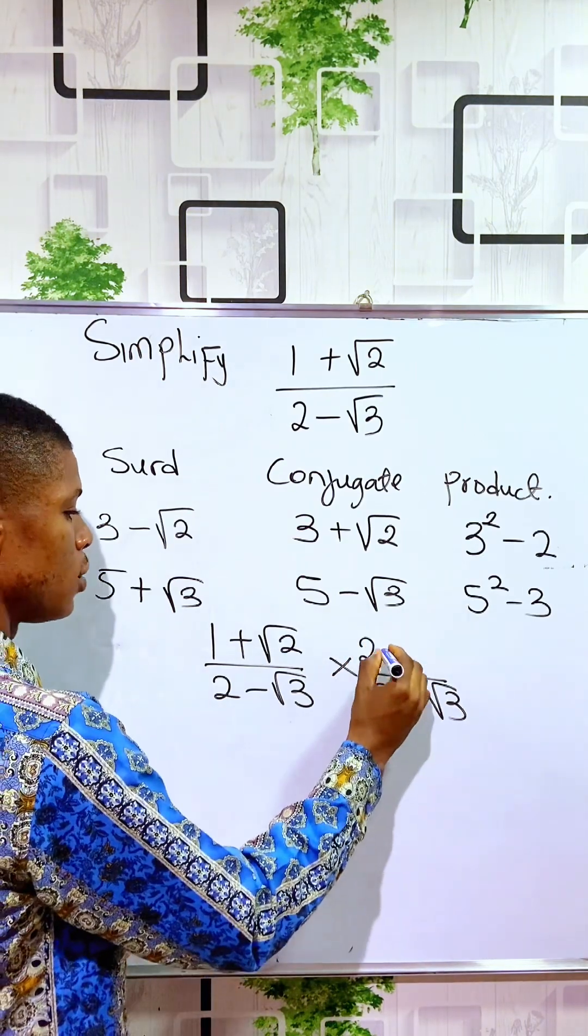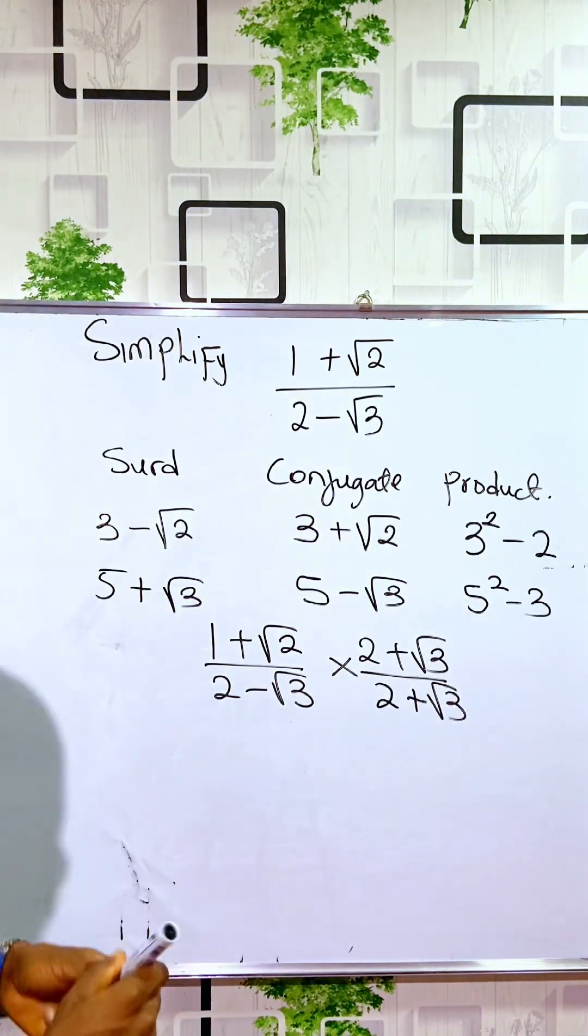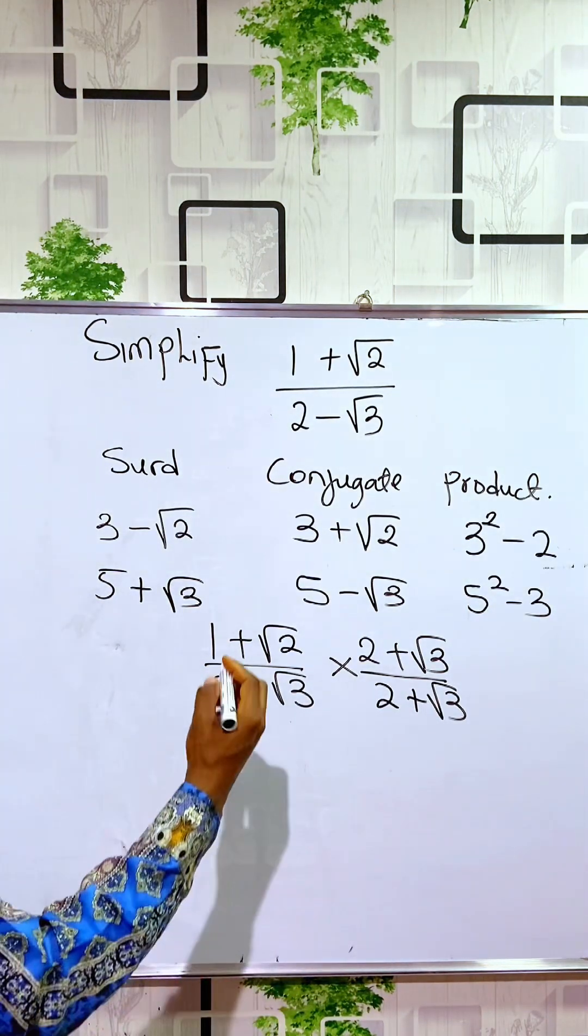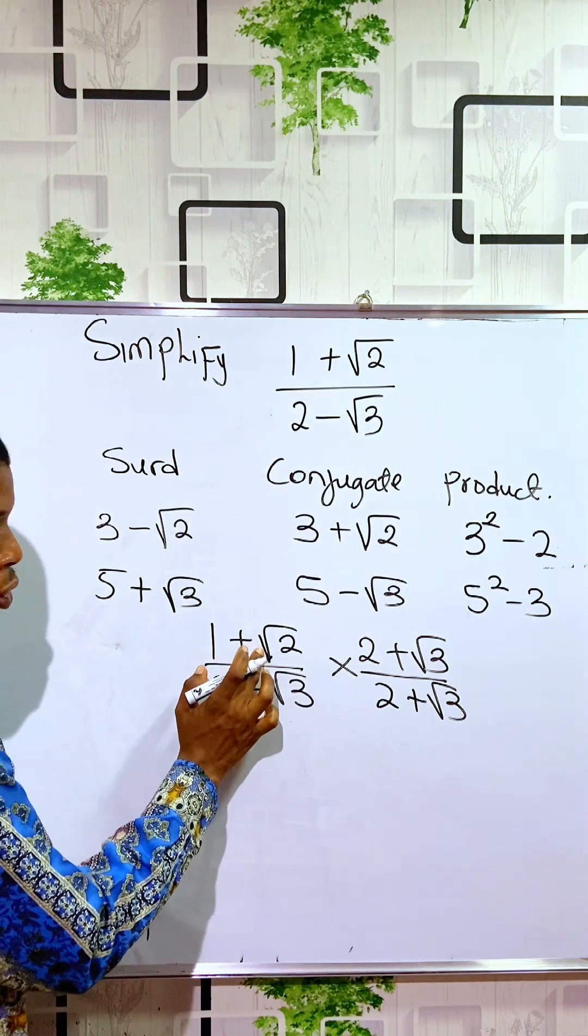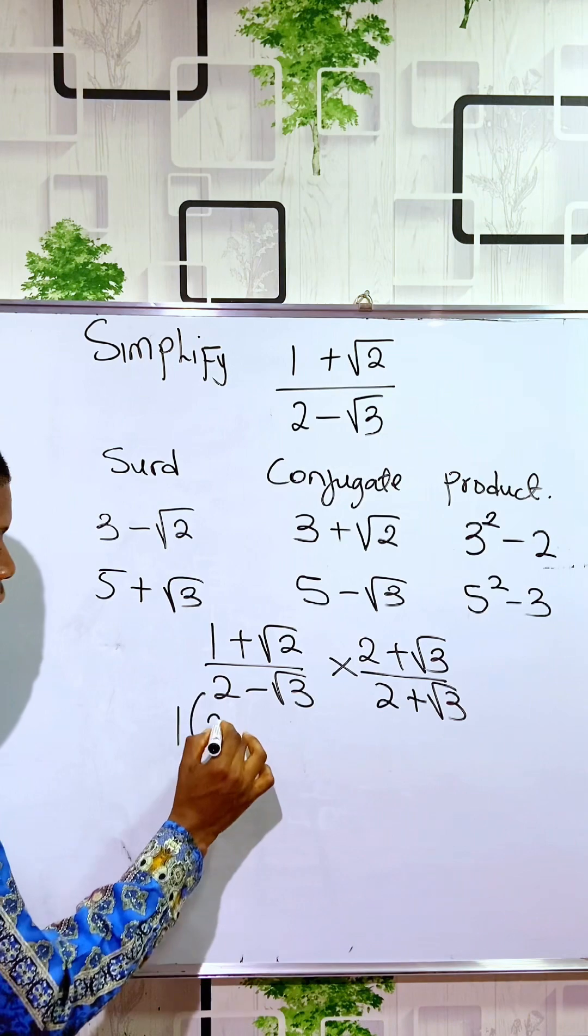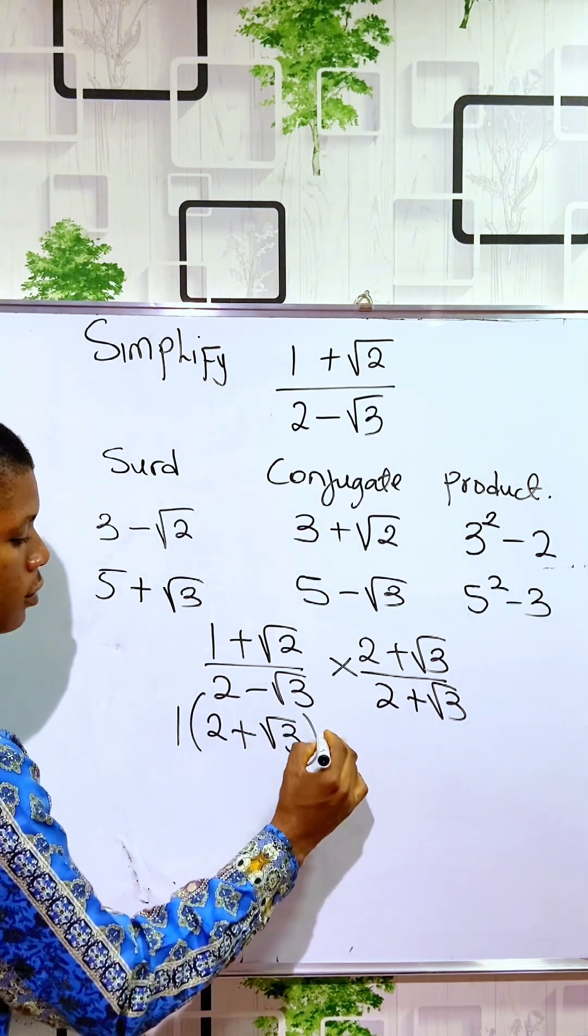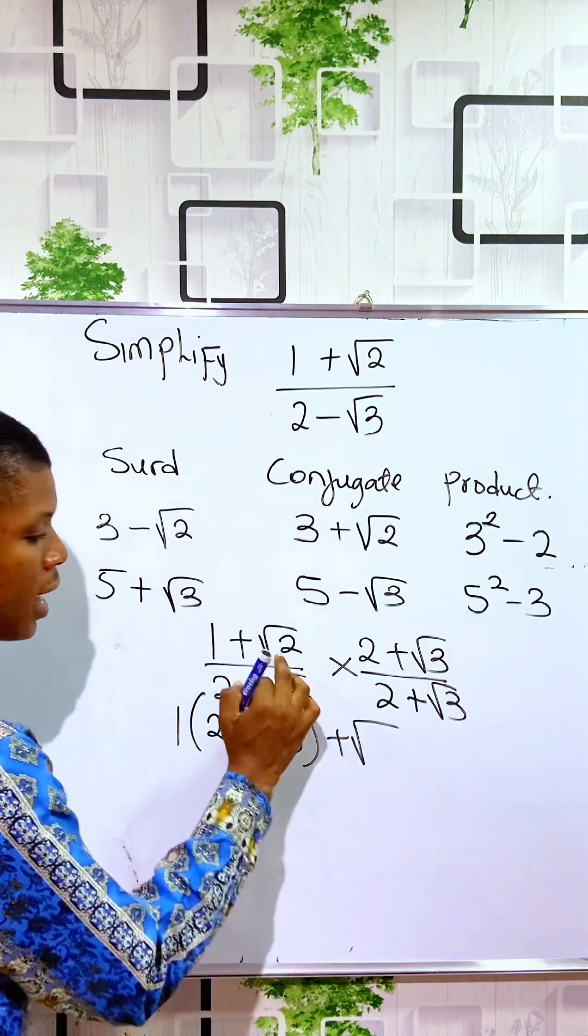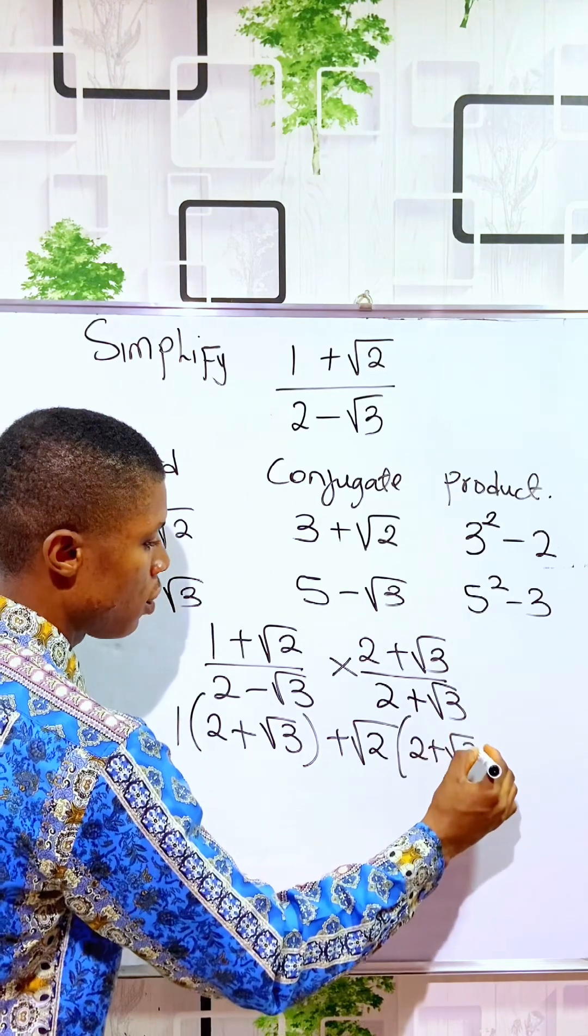When we multiply, 1 will multiply all, and √2 will multiply all. So when 1 multiplies, you have 2 + √3. Then √2 will multiply this, √2 multiply 2 + √3.